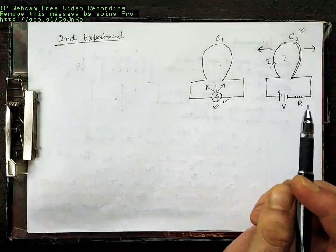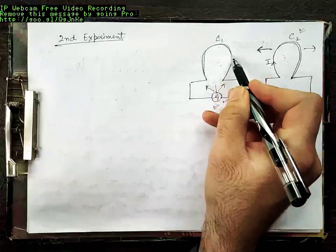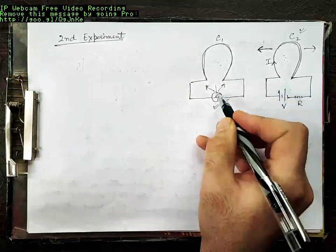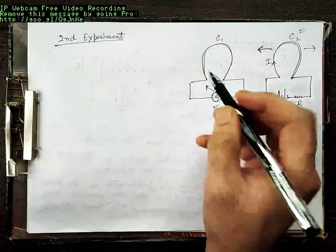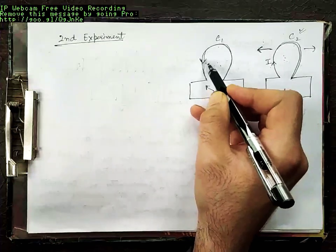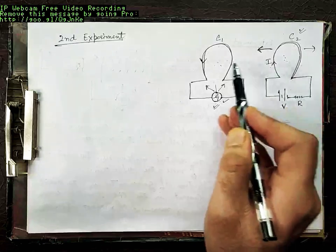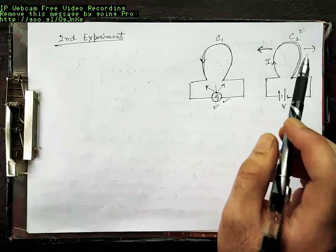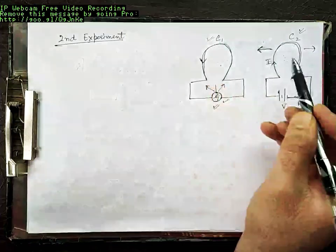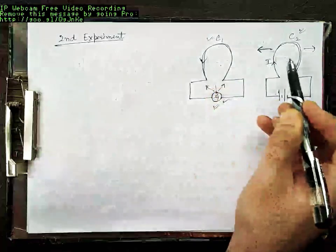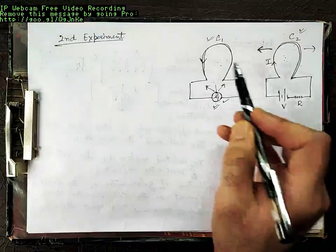So, the galvanometer connected to coil C1 shows deflection — meaning there is current flowing — only when there is relative motion between coil C1 and a magnet. In this case, coil C2 carrying current I is behaving as that magnet. When you push C2 towards C1 it shows deflection, and when you pull C2 away from C1 it shows deflection in the opposite direction.